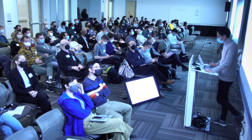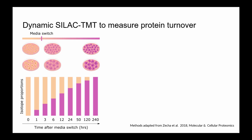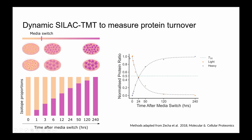Next, we also wanted to look at protein turnover, and to do this we employed dynamic SILAC TMT. We culture cells in media containing amino acids of certain weights — light isotopes — and at time zero we switch to media containing heavier amino acids, which can be detected through mass spectrometry. By monitoring the proportion of remaining light amino acid-bearing proteins, we can monitor how quickly each protein is turned over. We take the time it takes to reach 50% of the initial amount as our measure of turnover rate, calling that T50.